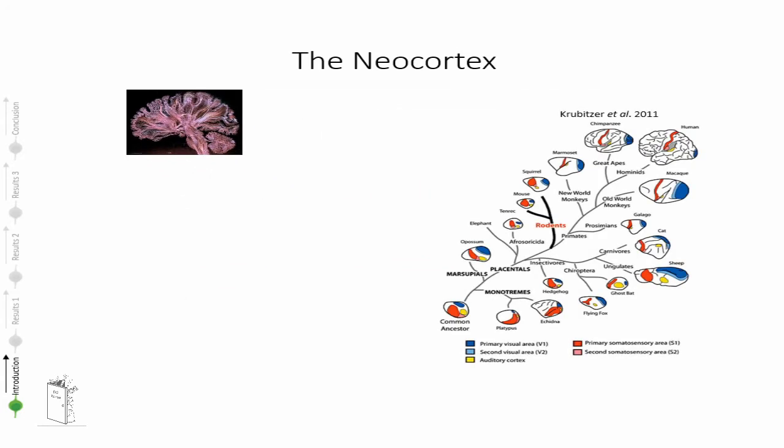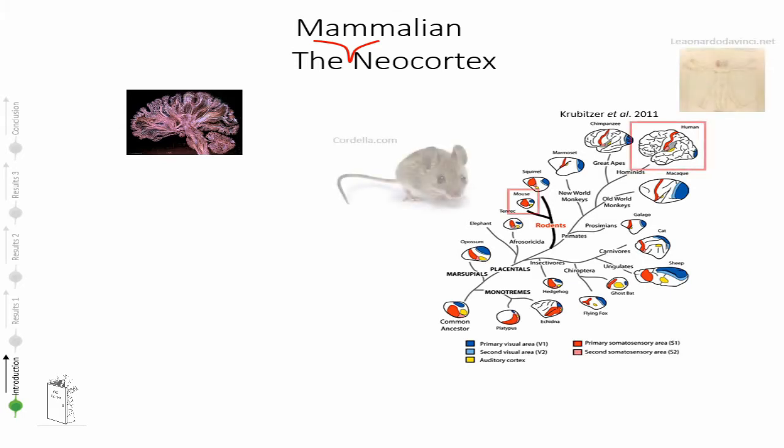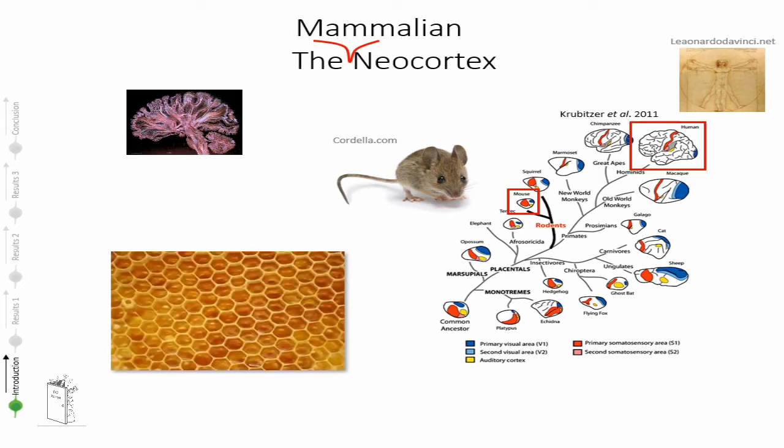Many people refer to the neocortex as also the mammalian neocortex. This structure is present only within the mammalian species and during evolution it underwent a dramatic change in size and organization. Although in all of the species we are always able to find a similar organization within primary and secondary areas, which is maintained whether we look at the mouse or at the human. One of the reasons why this structure managed to undertake such dramatic changes during evolution is its modularity.